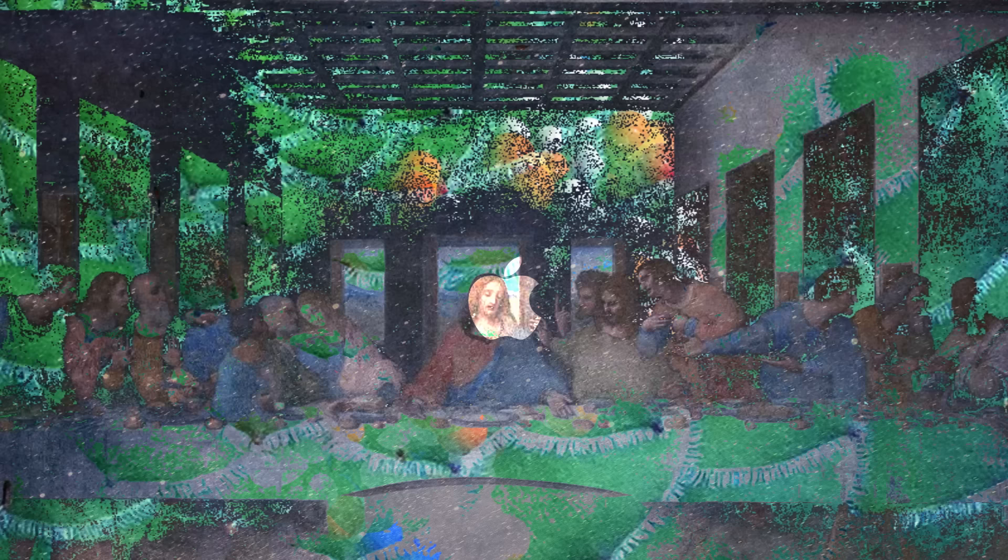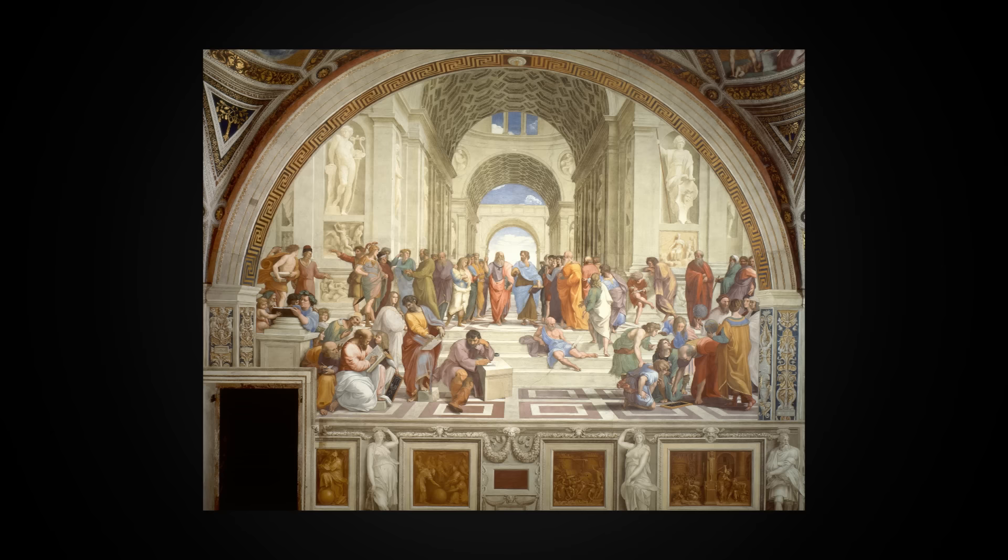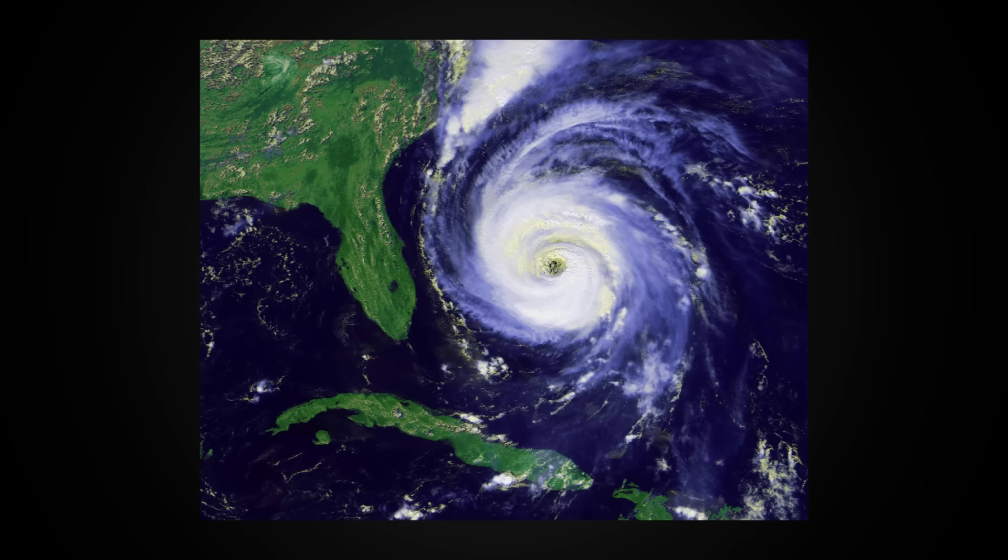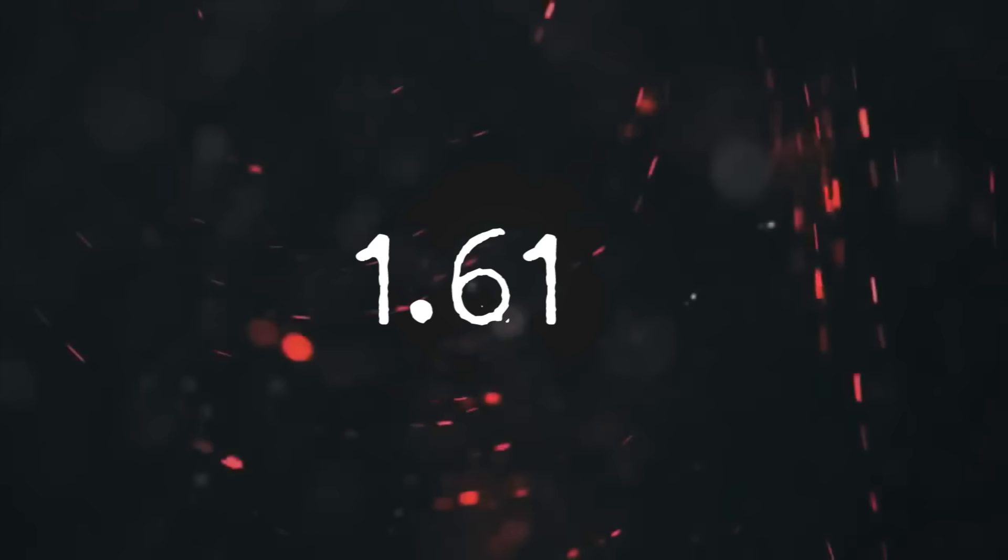The golden ratio appears all over nature, science, art, and design. It can be seen in everything from classical paintings to spiral galaxies, from ancient architecture to hurricane shapes. When you actually take the number of the golden ratio, you get 1.618. That number's got relevance to the song as well.